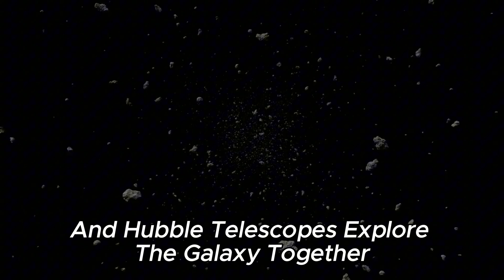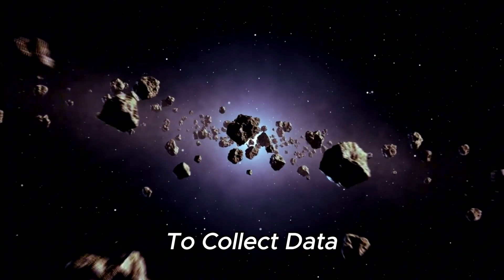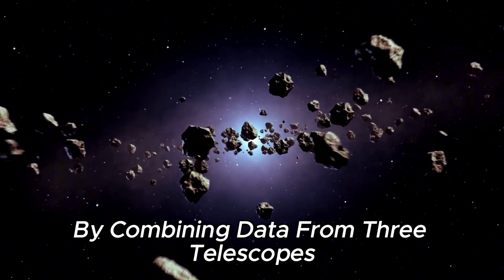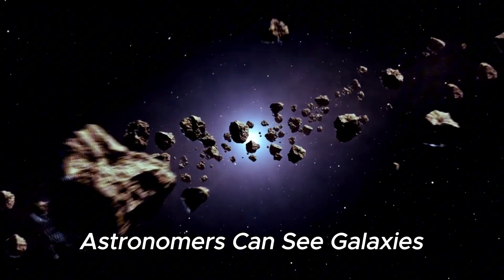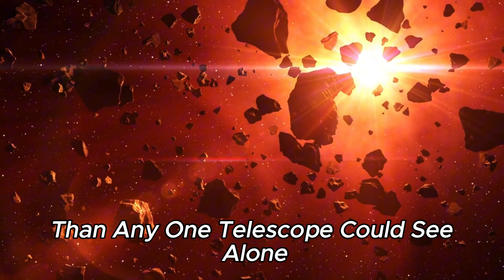The Spitzer, Chandra and Hubble telescopes explored the galaxy together, each using different parts of the electromagnetic spectrum to collect data. By combining data from three telescopes, astronomers can see galaxies up to 100 times farther away than any one telescope could see alone.